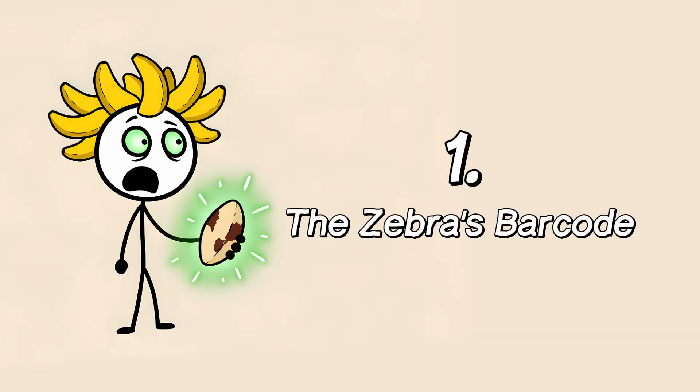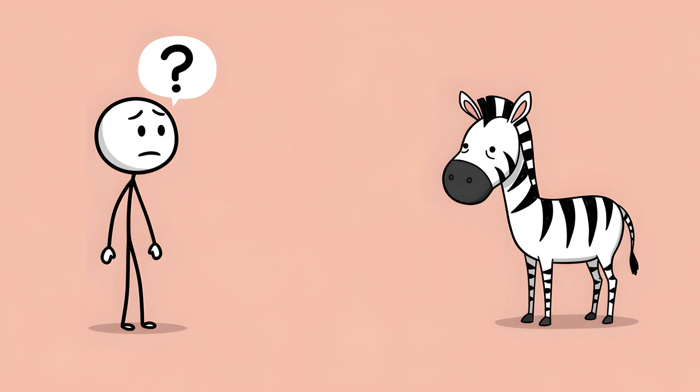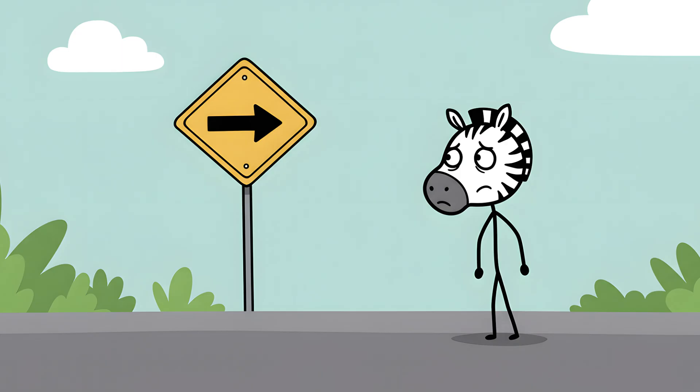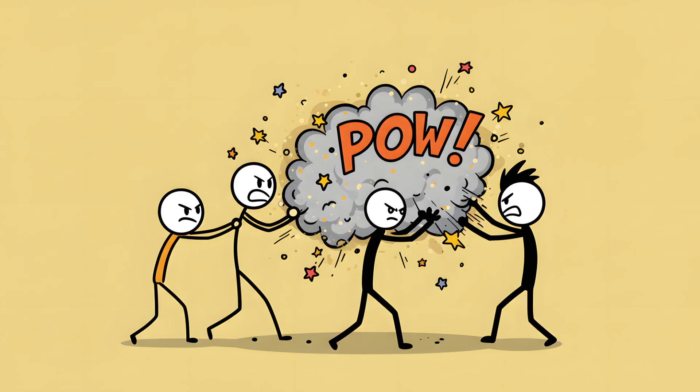Number one, the zebra's barcode. Why does a zebra have stripes? It seems like a simple question you'd ask a five-year-old. But it's a question that has stumped brilliant scientists, including Charles Darwin himself. For an animal trying to hide from lions on a golden-brown savannah, covering yourself in a dazzling pattern of black and white seems like the single worst fashion choice imaginable. It's like wearing a neon sign that says, Eat me. There are four main theories, and they've all been fighting it out for over a century.